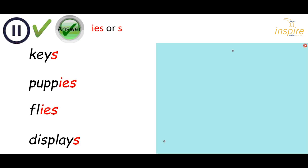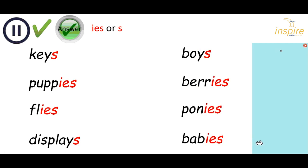These are your answers. You should have keys — just add an S, because there's a vowel before the Y. Puppies — change the Y to an I, add ES. Flies — change the Y to an I, add ES. Displays — we've got a vowel before the Y, so it's just add S.